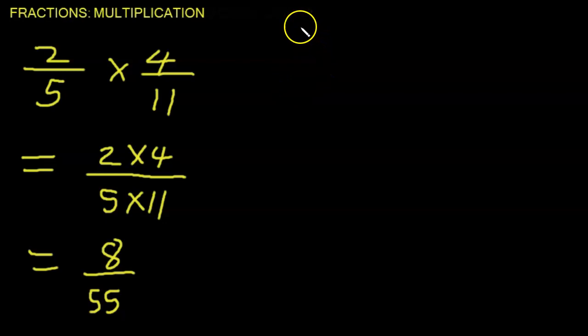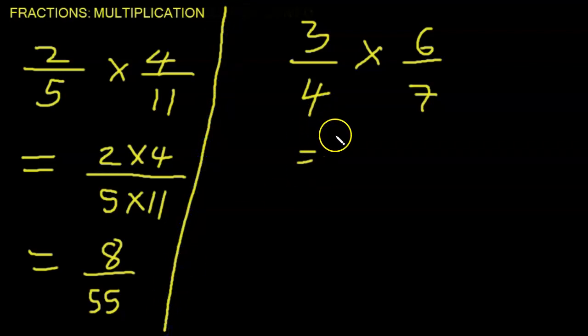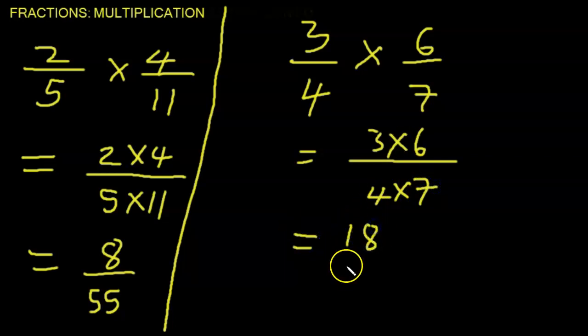Let's do another one. Let's say 3 over 4 times 6 over 7. Again, rule, multiply numerator times numerator, always 3 times 6 over 4 times 7. 3 times 6 is 18. 4 times 7 is 28.